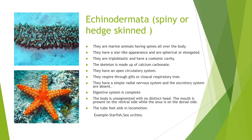Echinodermata means spiny or hedged skin. From the image you can see they have spines all over the body — these are marine animals. The image shows a starfish, which has a star-like appearance. The body can be spherical or elongated. They are triploblastic and have a coelomic cavity. The skeleton is made mainly of calcium carbonate. They have an open circulatory system, respire through gills and cloacal respiration, and have a simple radial nervous system. The excretory system is absent and the digestive system is complete.